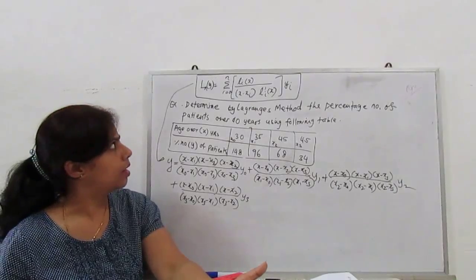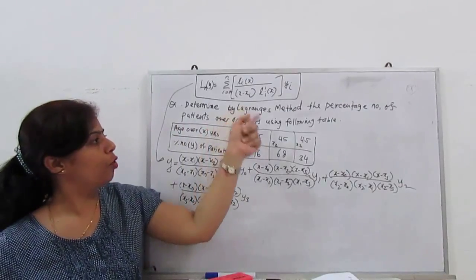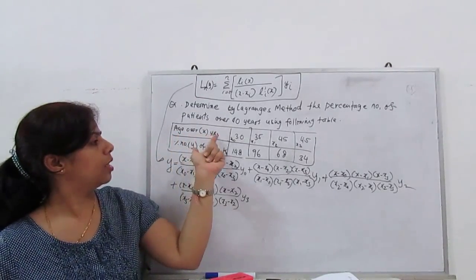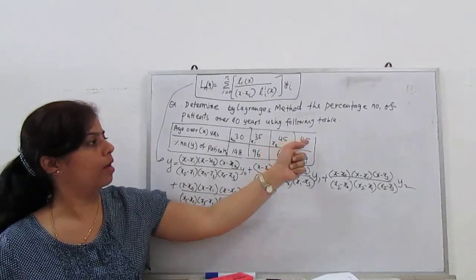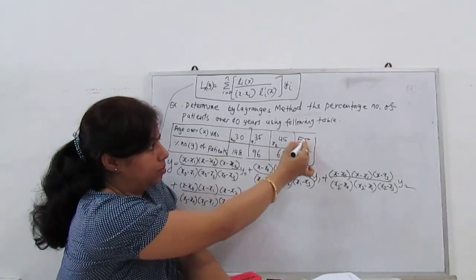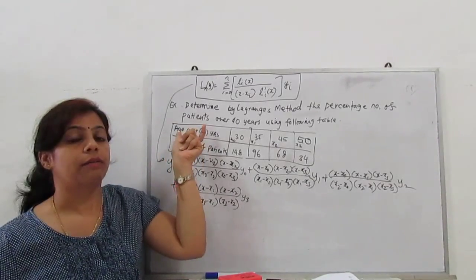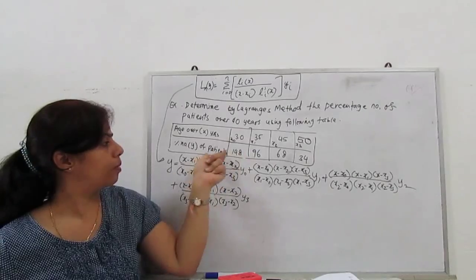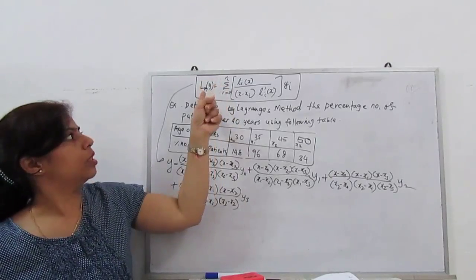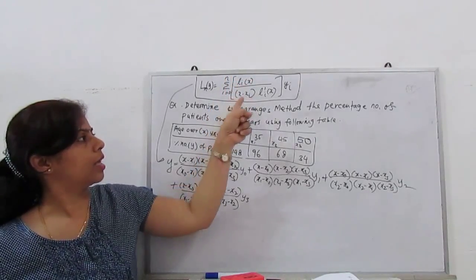One example: determine by Lagrangian formula the percentage number of patients over 40 years. The table given: x is years 30, 35, 45, and 50. The percentage y of patients is 148, 96, 68, and 34.